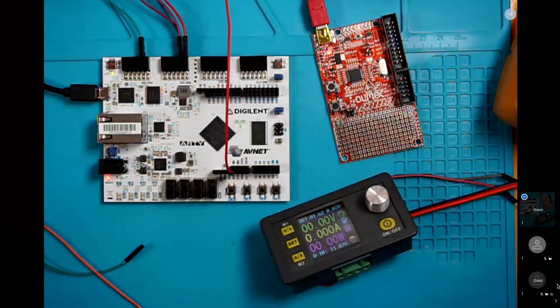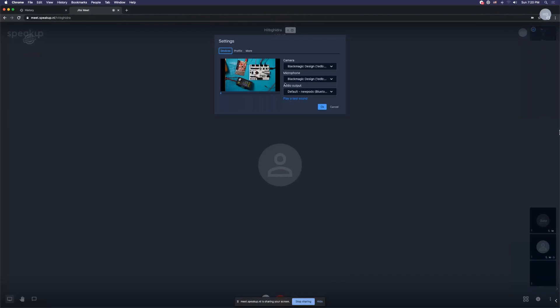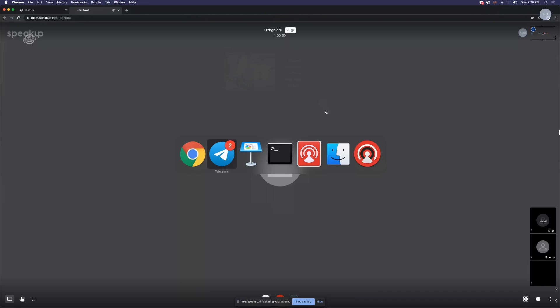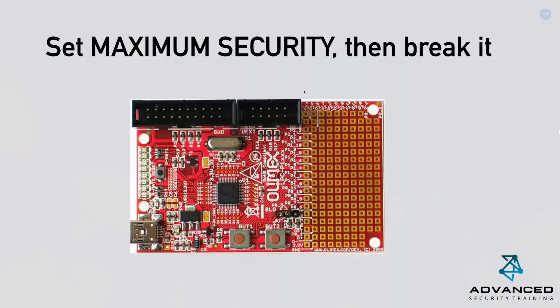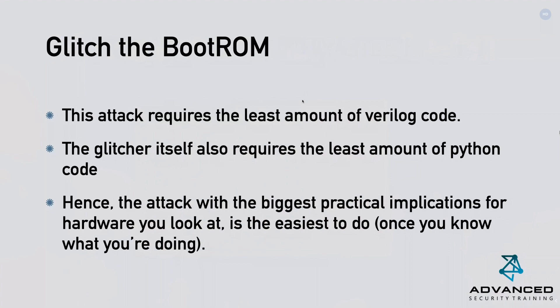Sorry for the screen-sharing issue — I forgot to give Chrome screen-sharing rights. This is the LPC1343 board we're looking at. As Thomas explained, we want to glitch the boot ROM. Using Ghidra, we can analyze and find vulnerabilities in the boot ROM. On this specific microcontroller, the CRP value is only checked once during boot, which makes it very easy to trigger — we just reset the board, perform a glitch, and check on each boot cycle whether it worked.